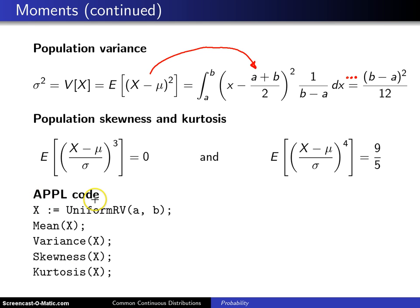The APPL code here in this case, x gets set equal to a uniform random variable with parameters a and b. And if you type in mean, variance, skewness, and kurtosis of x, out will come the mean, variance, skewness, and the kurtosis.